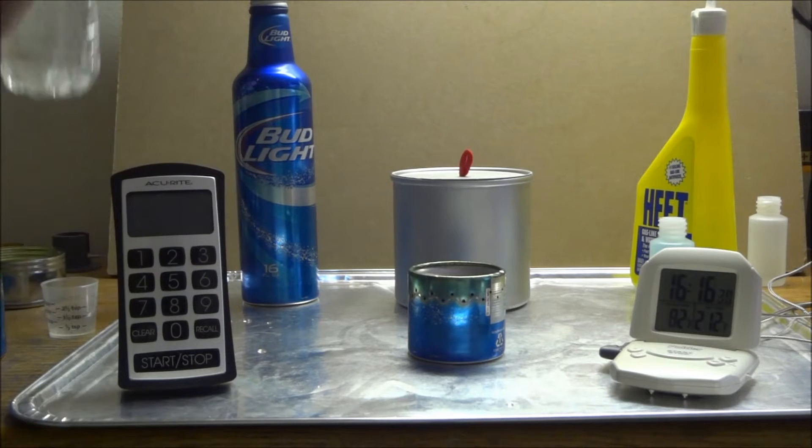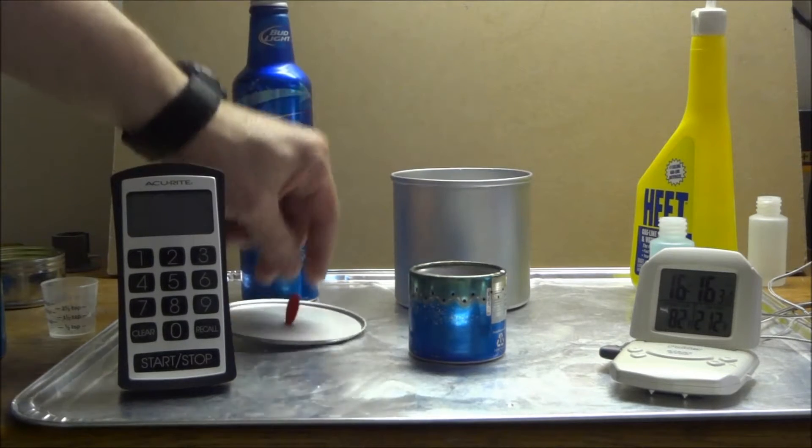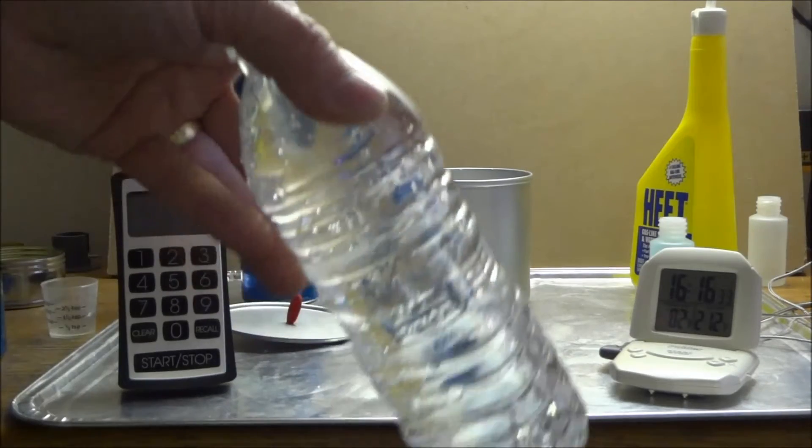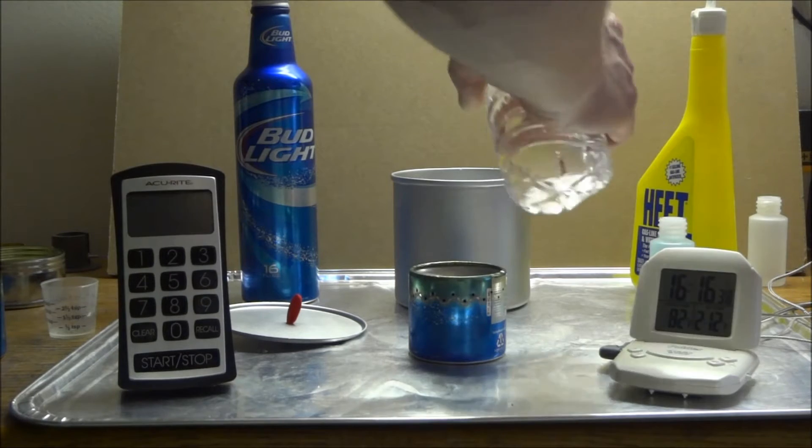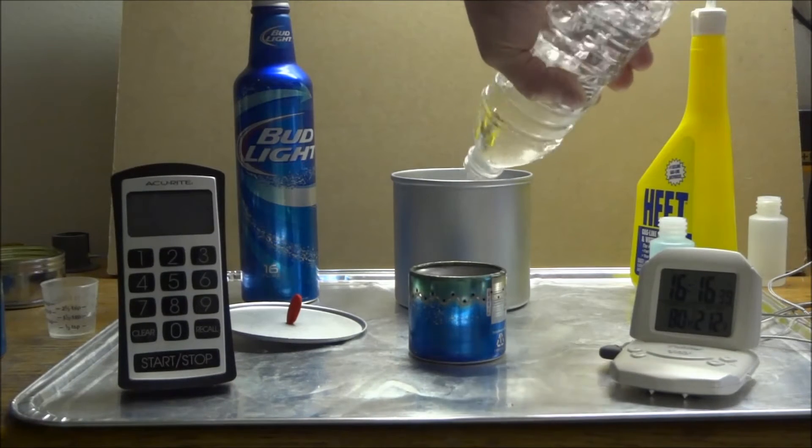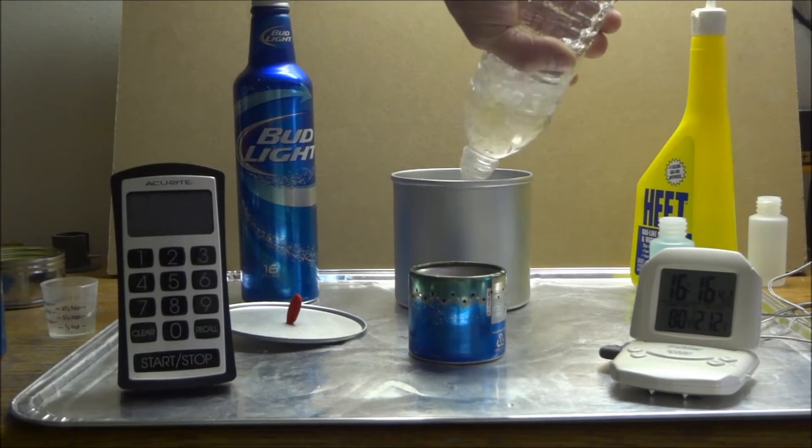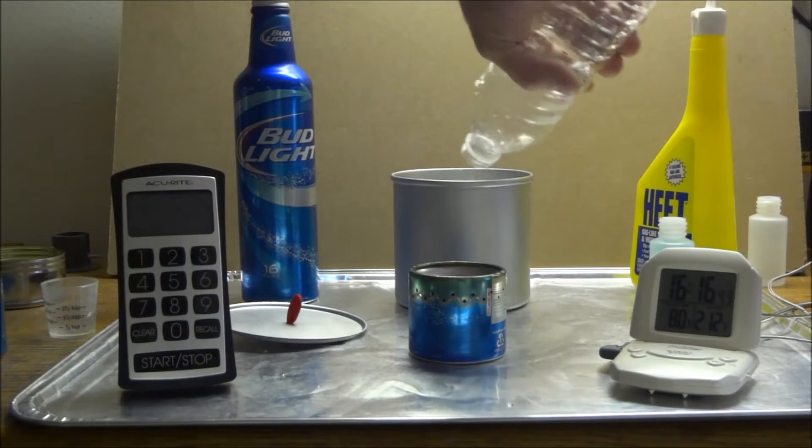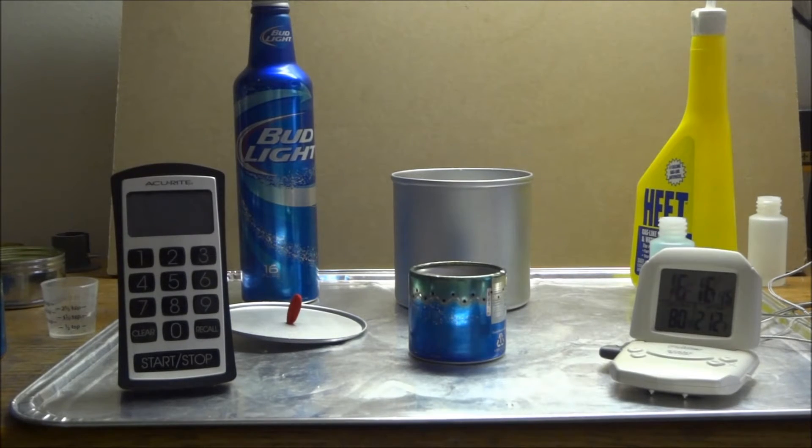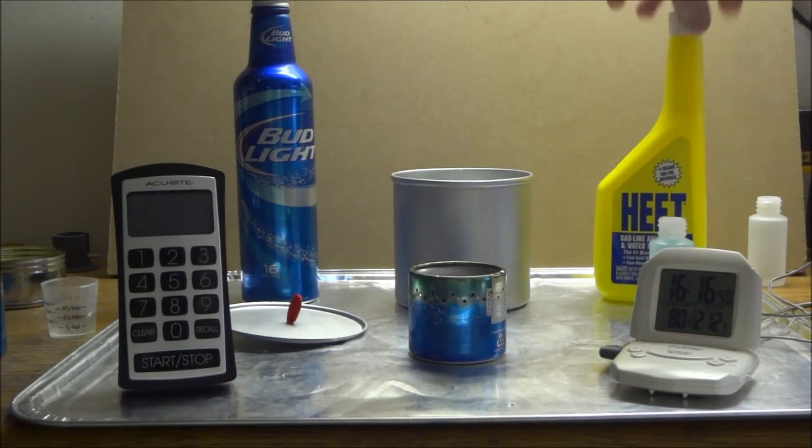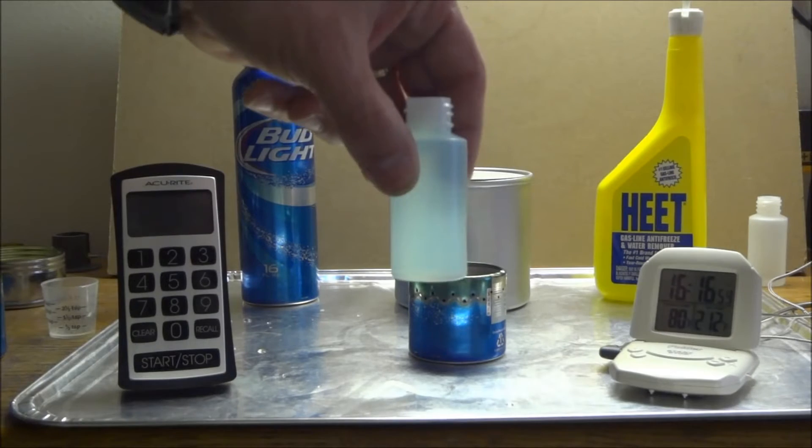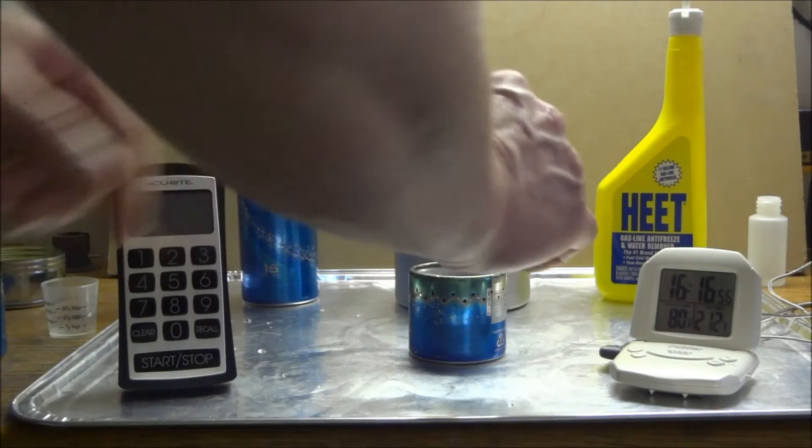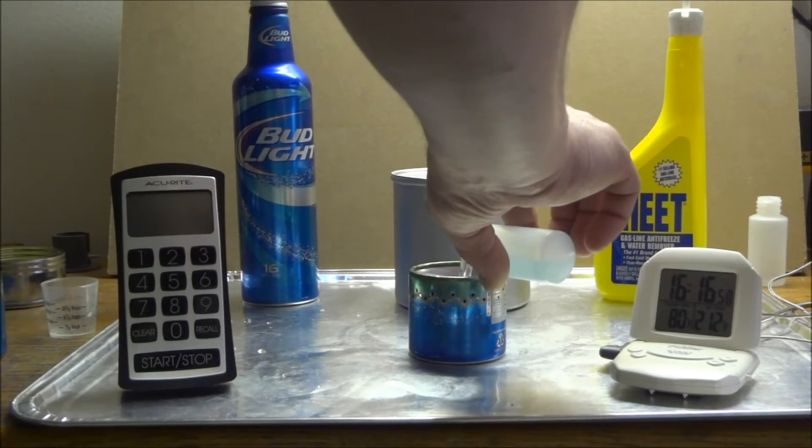What I've got here is my 10 centimeter cook pot and I've got a 16.9 ounce water bottle here, a little over two cups of water. We're going to be using heat gasline antifreeze, and I've got one ounce of heat.